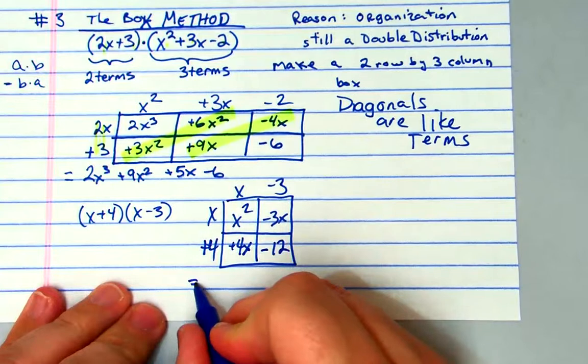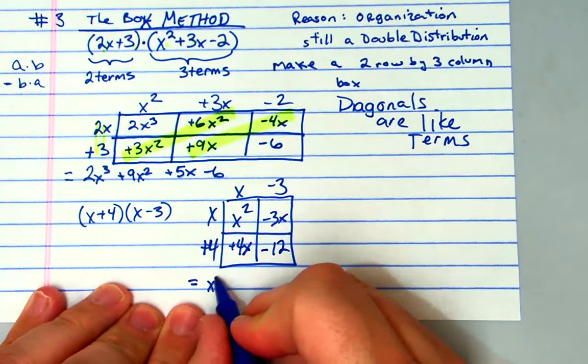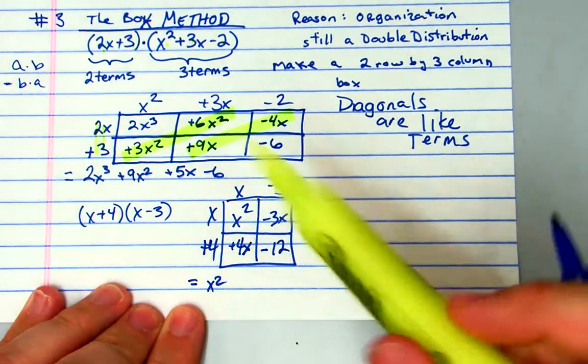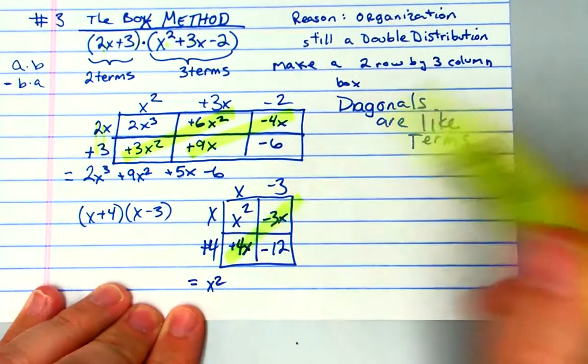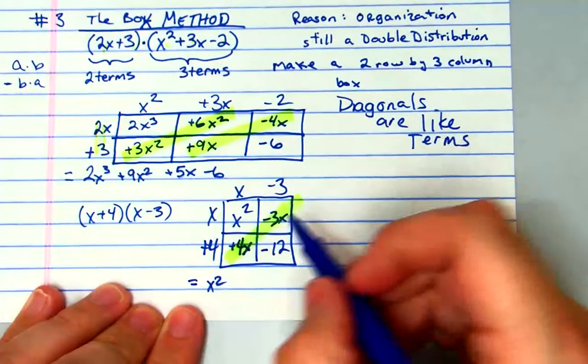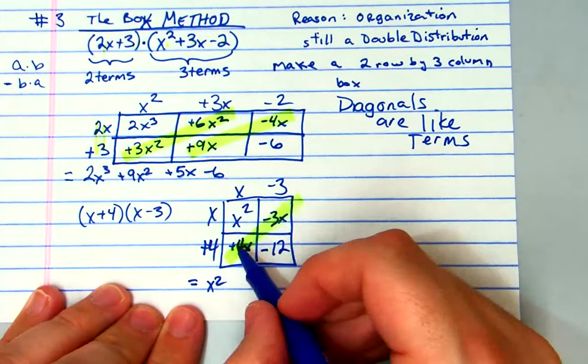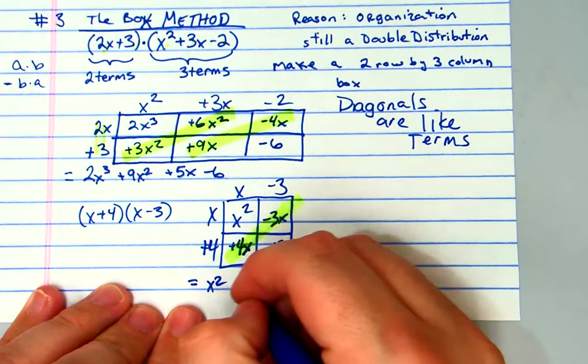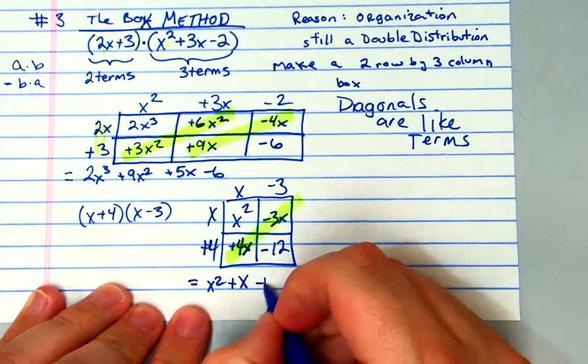And so our answer to this would be x squared, but look at the diagonal - those are like terms. Four minus three is one, so it's plus x minus 12.